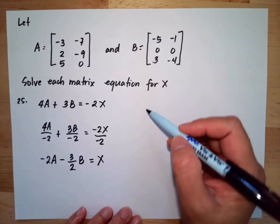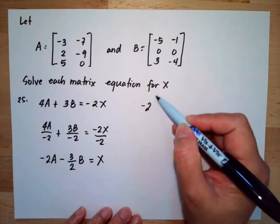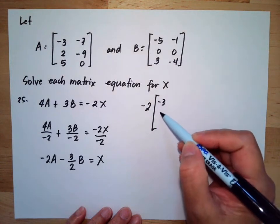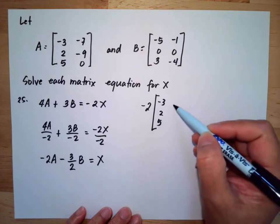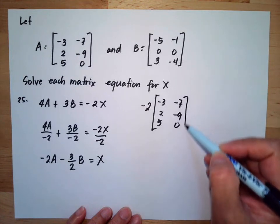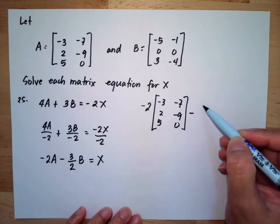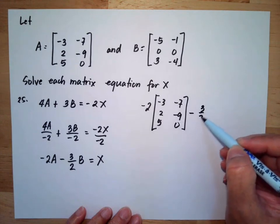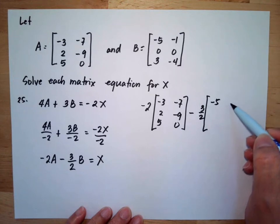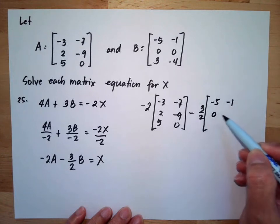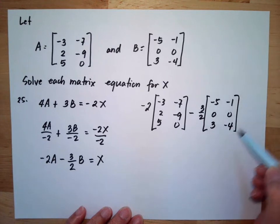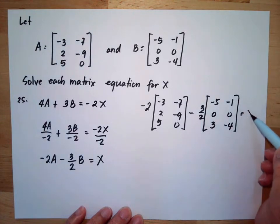So now we have negative 2 times matrix A — entries negative 3, 2, 5, negative 7, negative 9, 0 — minus 3 halves times matrix B — entries negative 3, negative 5, negative 1, 0, 0, 3, negative 4 — equals X.